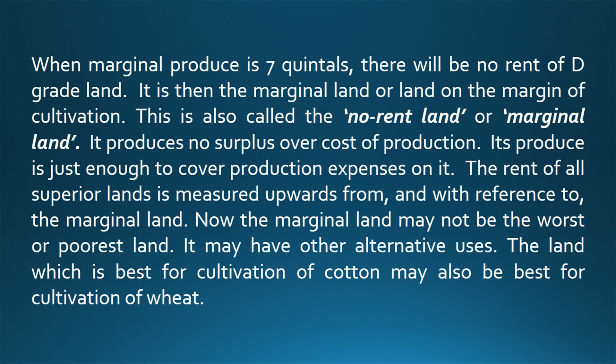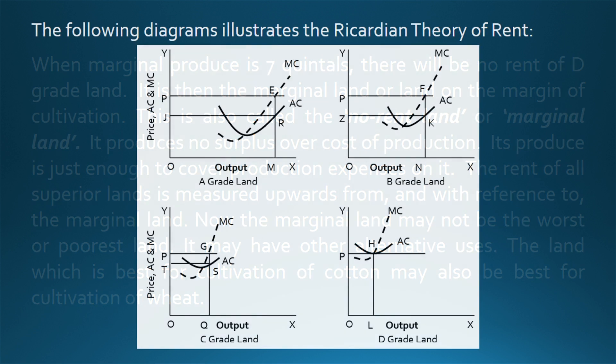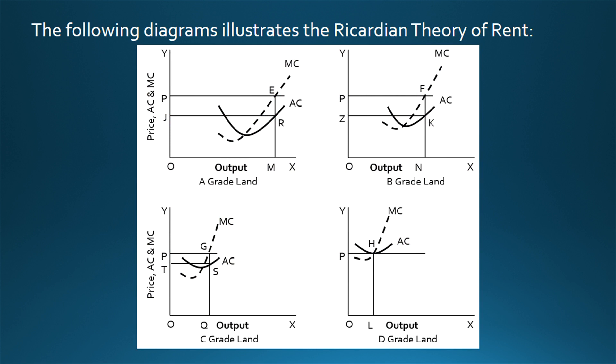When marginal produce is 7 quintals, there will be no rent of D grade land. It is then the marginal land or land on the margin of cultivation. This is also called the no-rent land or marginal land. It produces no surplus over cost of production. Its produce is just enough to cover production expenses on it. The rent of all superior lands is measured upwards from, and with reference to, the marginal land. Now the marginal land may not be the worst or poorest land; it may have other alternative uses. The land which is best for cultivation of cotton may also be best for cultivation of wheat. The following diagram illustrates the Ricardian theory of rent.